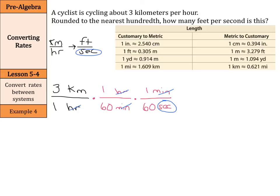Now we can think about what to do with our kilometers. Right now our kilometers are on top, so we need to put them on the bottom to cancel them out. As we look at our conversion table, we have 1 kilometer equals 0.621 miles, but we don't have a kilometers-to-feet conversion directly. So we'll get our kilometers into miles, then our miles into feet. We use 1 kilometer equals 0.621 miles — kilometers cancel — and then since 1 mile equals 5,280 feet, our miles cancel and we have our feet.